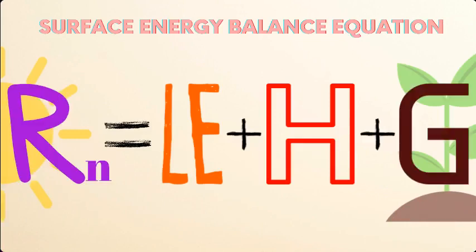And that's a wrap. That's the surface energy balance equation. Net radiation equals the fluxes: latent heat flux plus the sensible heat flux plus the soil heat flux. Thanks for listening.